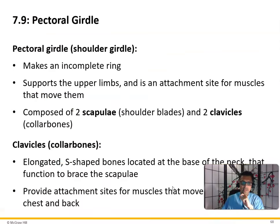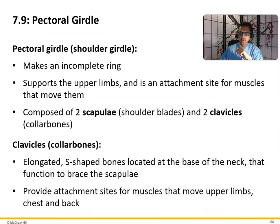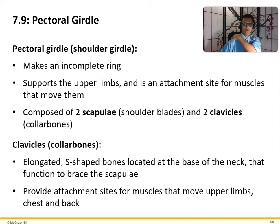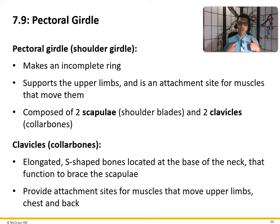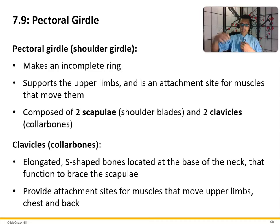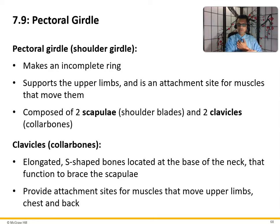We're going to continue with the appendicular skeleton and start with the pectoral girdle, also known as the shoulder girdle. It makes an incomplete ring, supports your upper limb, and is an attachment site for many muscles. It's composed of two scapulae (shoulder blades) and two clavicles (collarbones). The sternoclavicular joint is actually the only real bony attachment that your upper extremities have to your trunk — everything else is held on by muscles and ligaments.